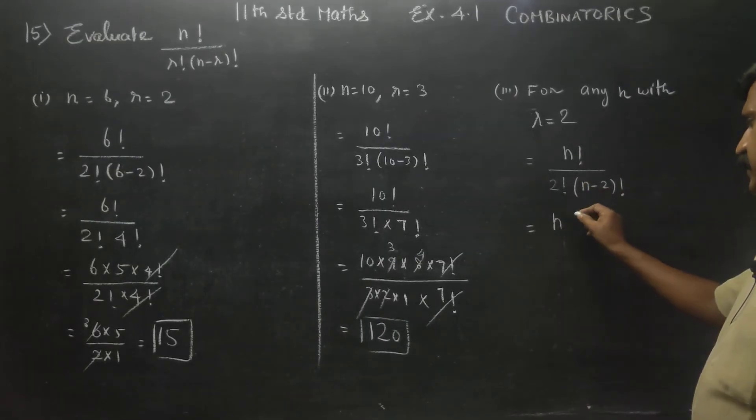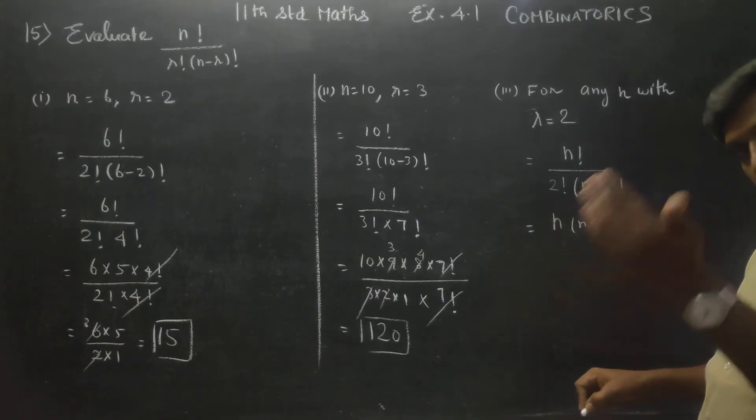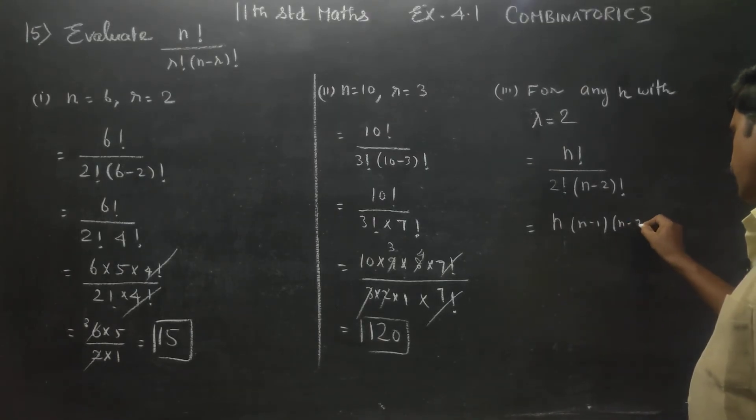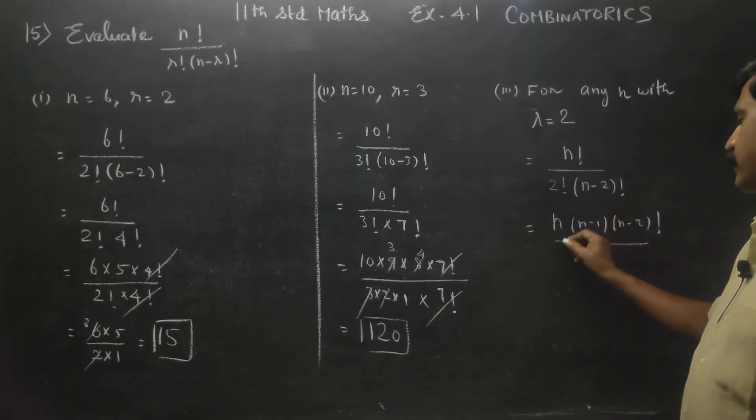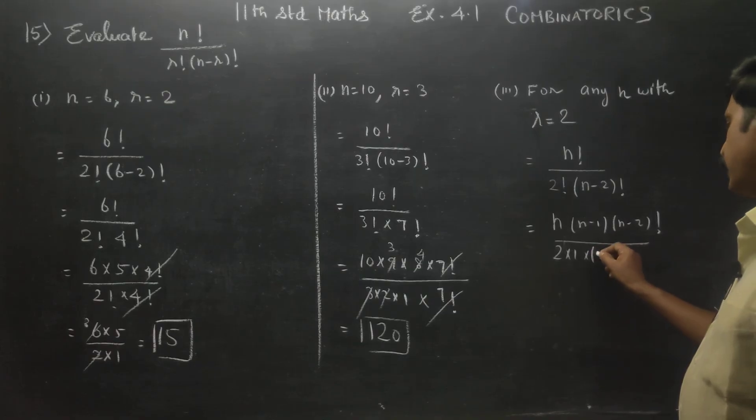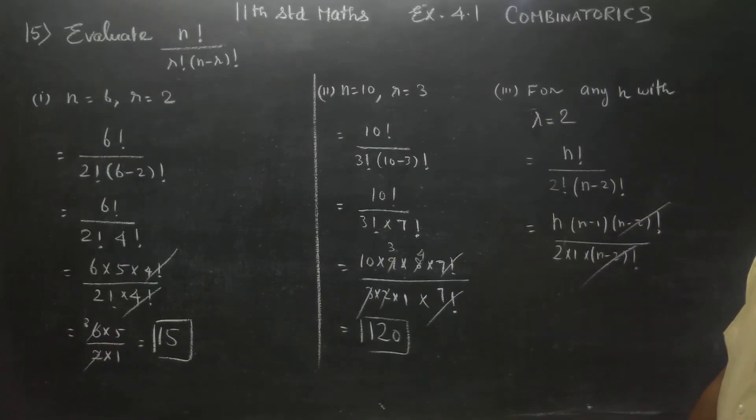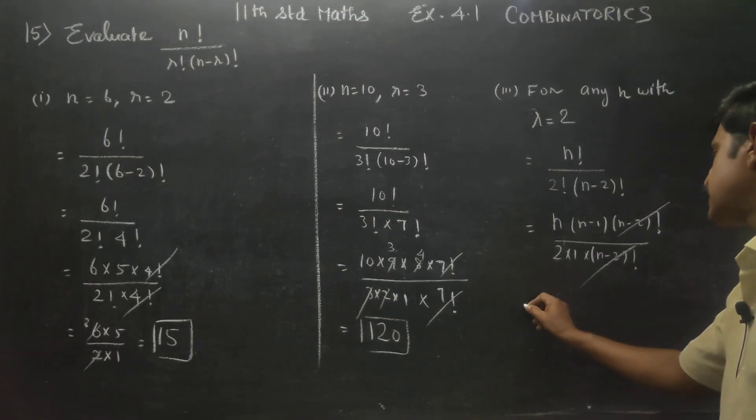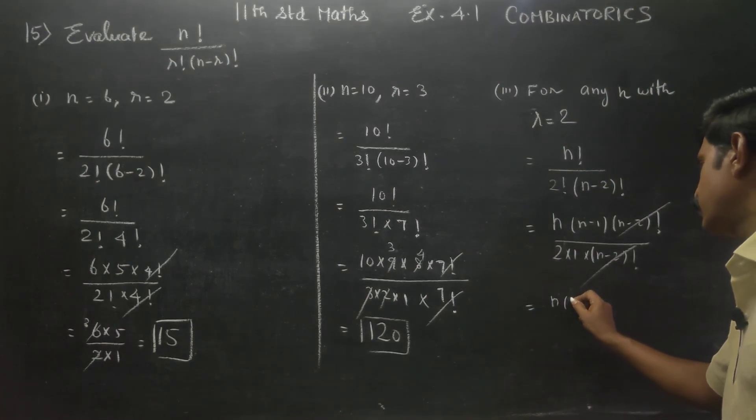n minus 2 factorial, cancel it. Therefore your balance answer will be n into n minus 1 by 2.